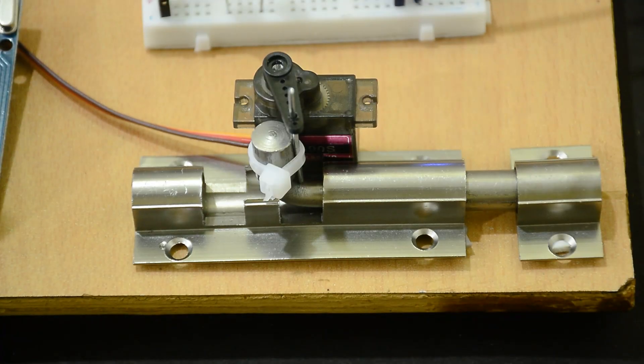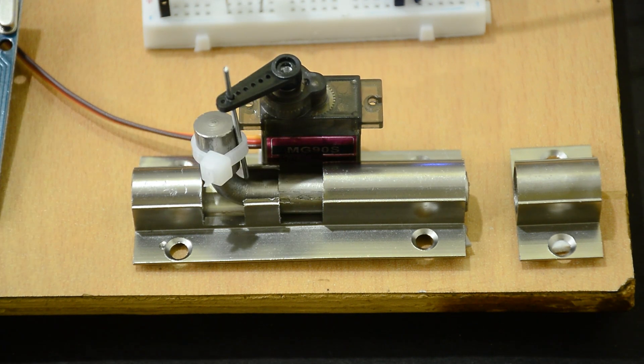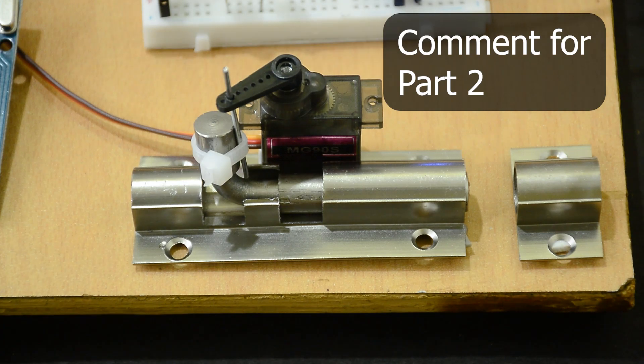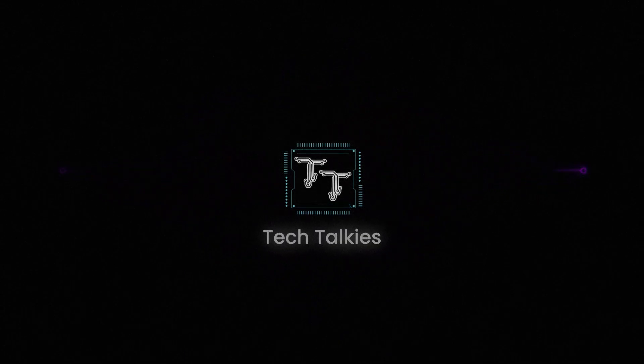And since we are using an ESP8266 board, we can also make the lock open from our mobile. Comment if you want me to make it in part 2. Like and subscribe for more tech projects.